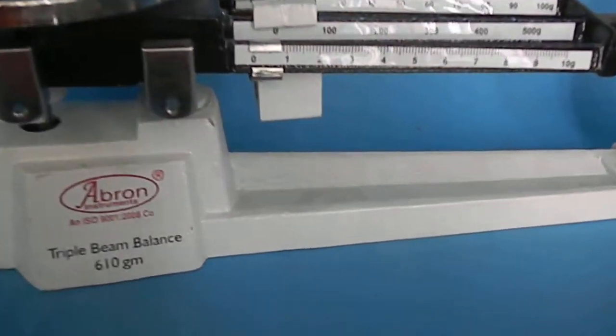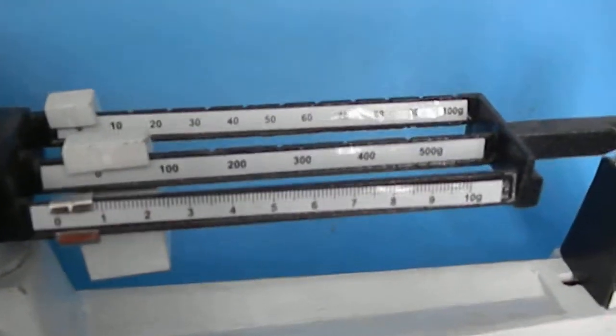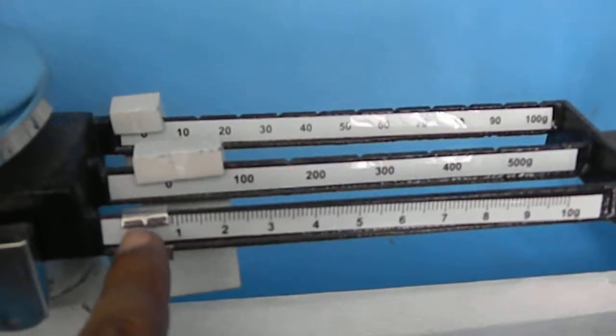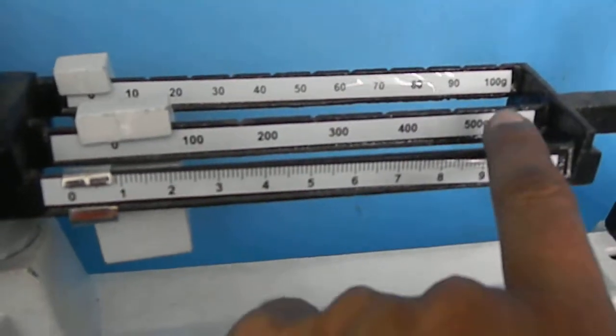There is a bronze triple beam balance of 610 grams. It has three scales: one weight which is for up to 10 grams, 500 grams, and 100 grams.